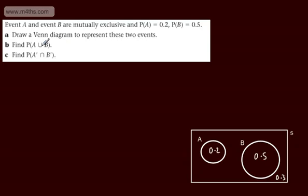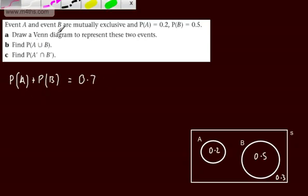Let's consider the first bit. The probability of A union B is simply now going to be the probability of A plus the probability of B. That is the probability of A union B, which is going to be equal to 0.2 plus the 0.5, which is going to be equal to 0.7. So we can say the probability of A union B is now going to be equal to 0.7.